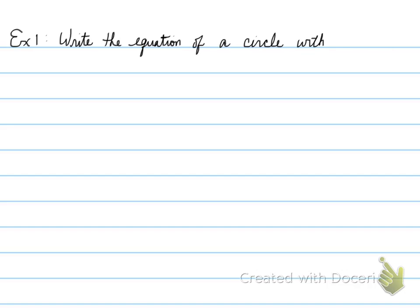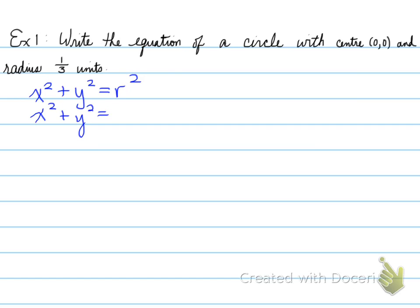Example one. You're asked to write the equation of a circle with center zero, zero, and radius one-third units. So r is equal to one-third. You have x squared plus y squared equals r squared is our general formula. We plug in the value for r, which is one over three, squared.